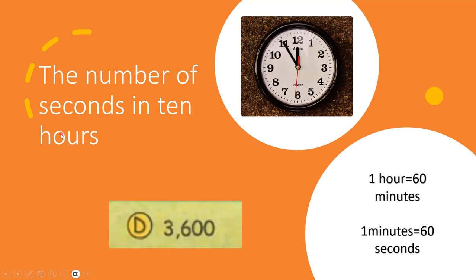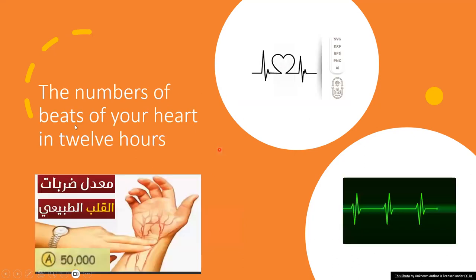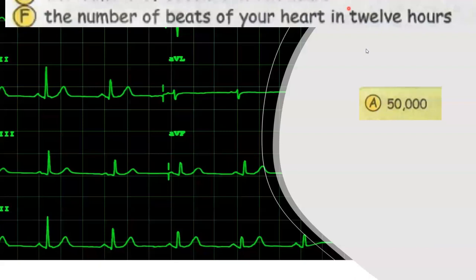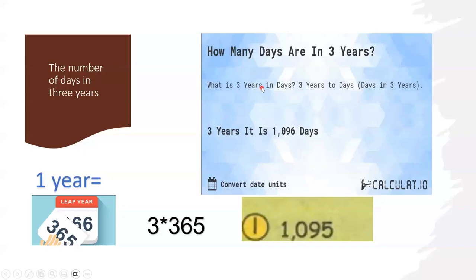The number of seconds in 10 hours. In one hour we have 60 minutes, and in one minute we have 60 seconds. So the number of seconds in 10 hours is 3,600. The number of beats of your heart in 12 hours: we have 50,000 beats of our heart in 12 hours.